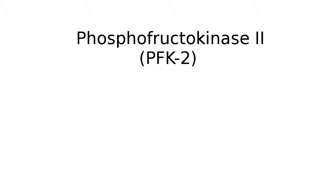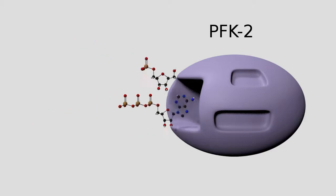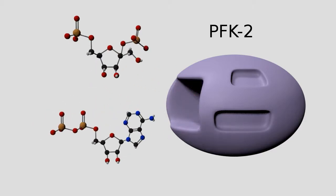Today, we're going to talk about phosphofructokinase 2, or PFK-2 for short. It's an enzyme that takes fructose 6-phosphate and ATP and reacts them to make fructose 2,6-bisphosphate and ADP.